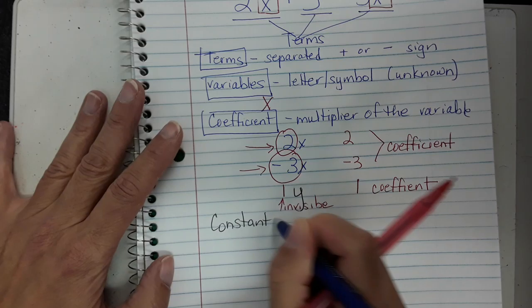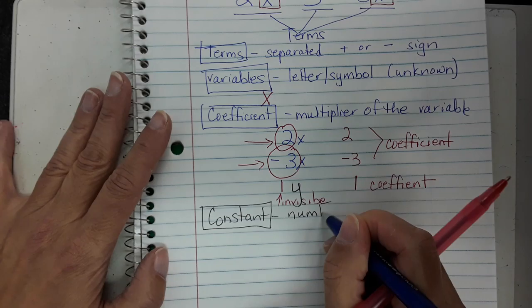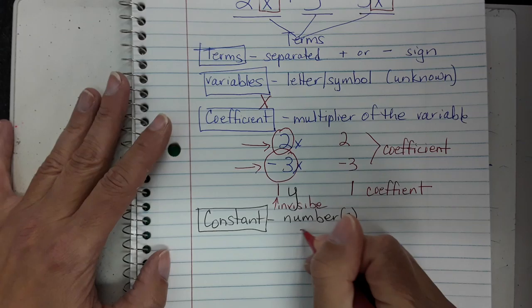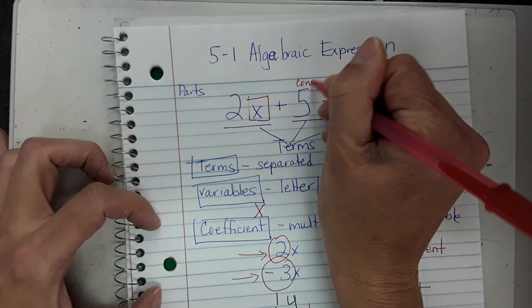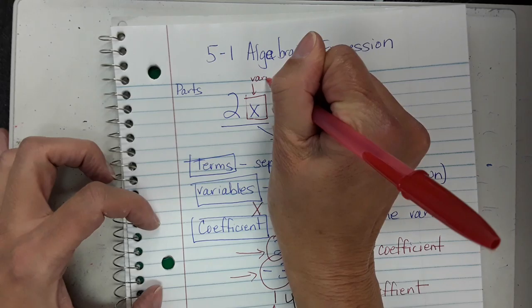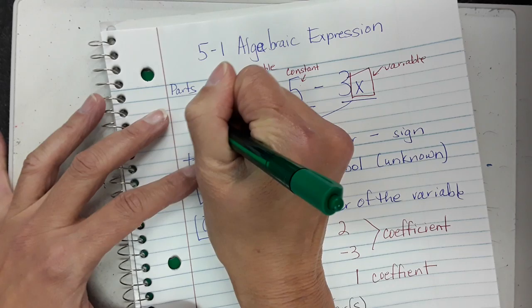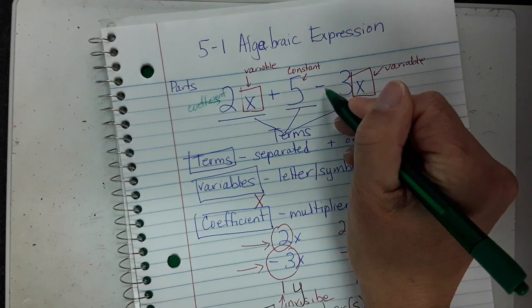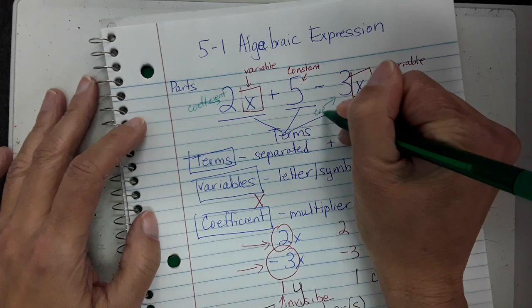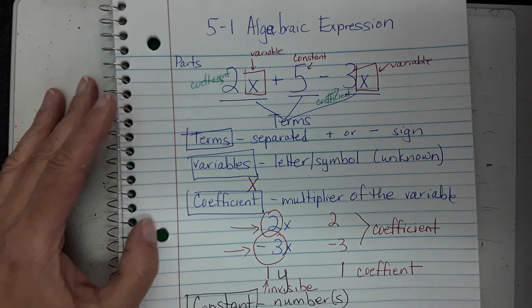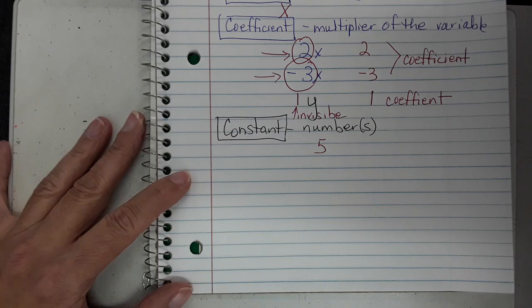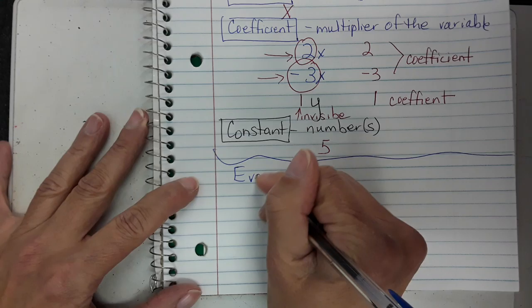There's one other part called the constant. The constant is the number in the problem — your numbers as you normally know them. So in our example, 5 is the constant. The x's are called variables, and the 2 and the negative 3 are our coefficients. If it has a negative or subtract sign in front of it, you have to bring it with it — so negative 3 is our coefficient. That's the parts of our algebraic expression.